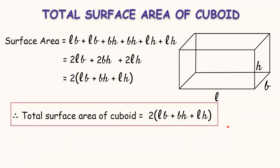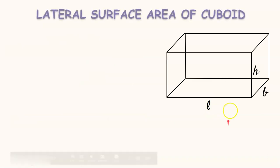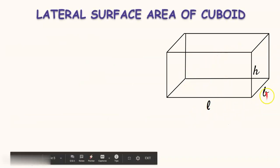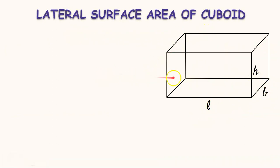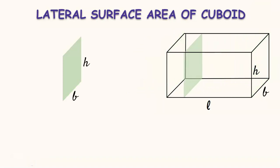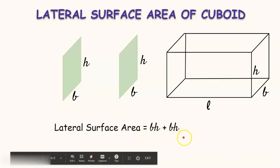Now let us find the lateral surface area of the cuboid with the same dimensions L, B, H. Lateral surface area means the area of 4 walls without considering the areas of the top face and bottom face. Let us find the areas of the first two side faces of this cuboid. B and H are their dimensions, so the area of each of these faces is B×H. By adding these two areas we get BH + BH.